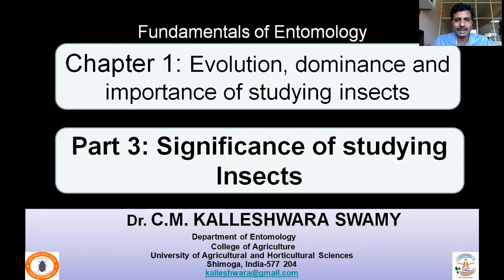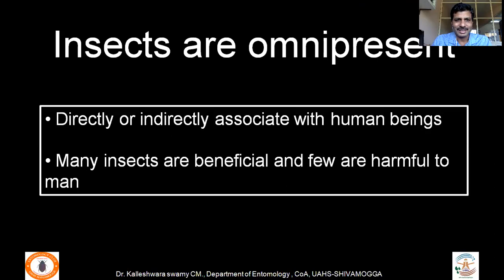Insects are omnipresent — they are everywhere. Because of their omnipresence, they frequently come in contact with human beings, directly or indirectly. More than 1,050,000 species of insects have been described. Probably less than 25,000 of those are harmful to humans around the globe, meaning more than 1,025,000 species are beneficial. So in order to exploit that benefit and manage harmful insects, research and education are necessary.